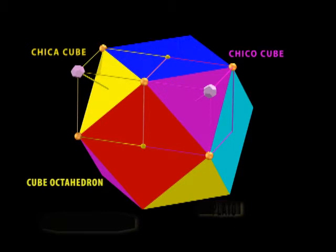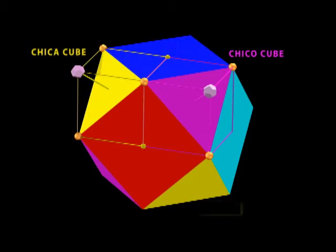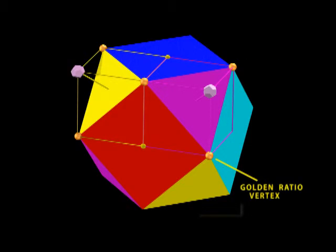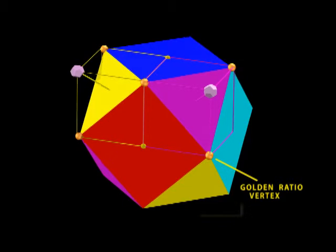I show a purple Chico and a yellow Chica cube. Notice that the yellow and purple triangles are provided with three gold spheres. These are the golden ratio spheres just like the dodeca.